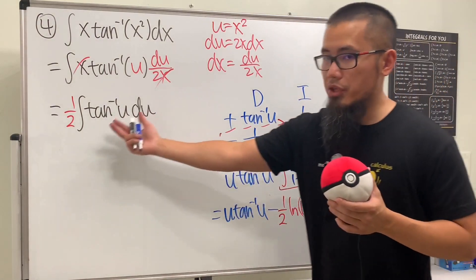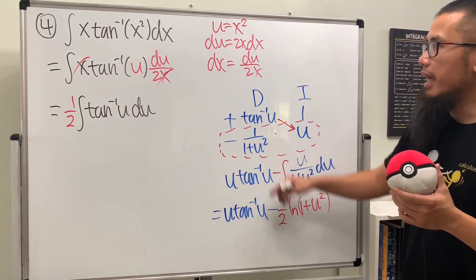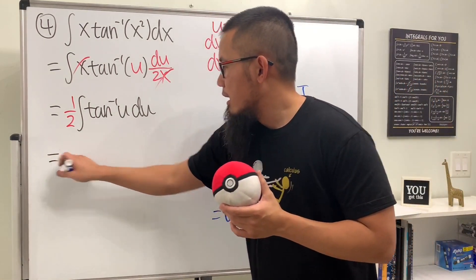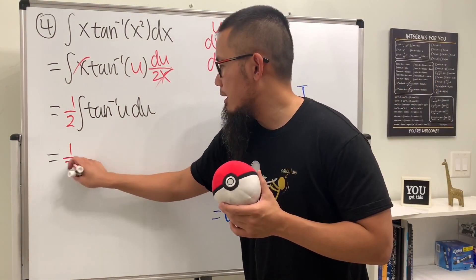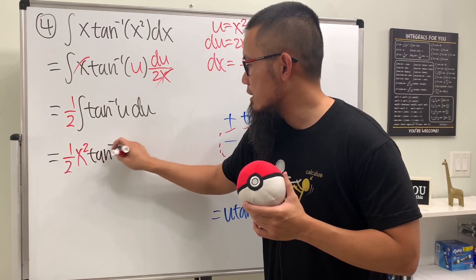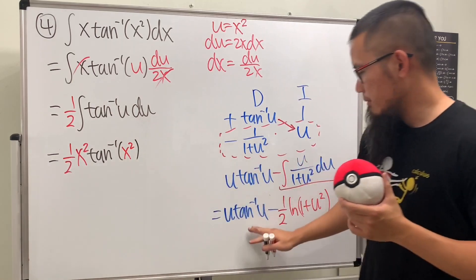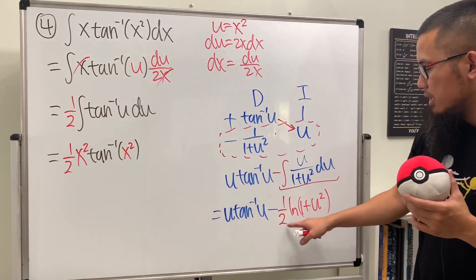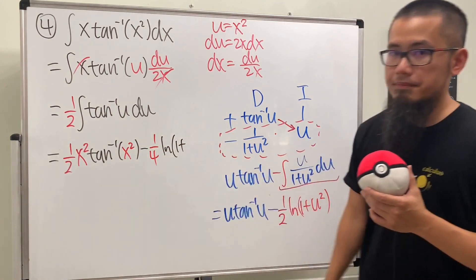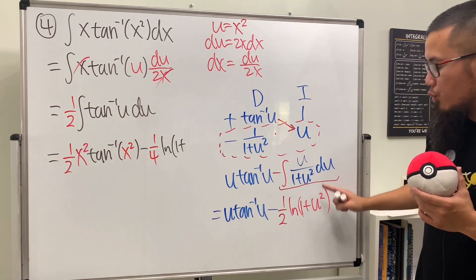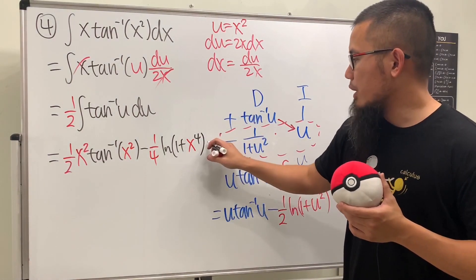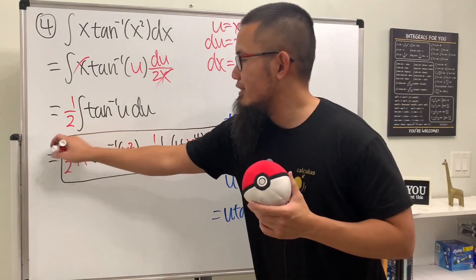Now put that back, and don't forget we still have the one half factor, and we also bring x squared back for u. So we have one half times x squared times inverse tangent of x squared. Then one half times negative one half gives us negative one quarter, times ln of (1 + (x squared) squared), which is 1 + x to the fourth power. Put on the plus c — that's it.